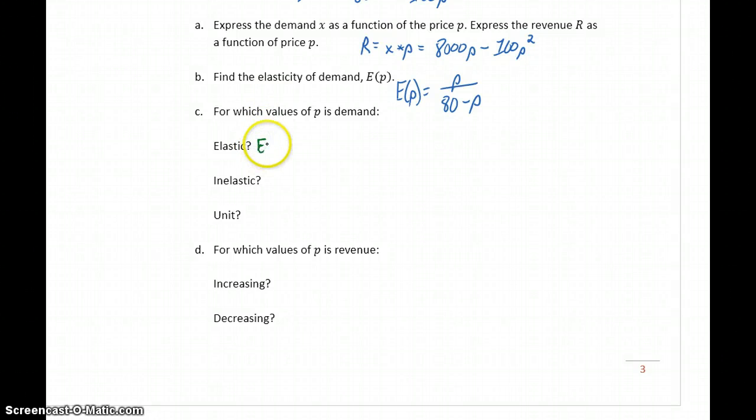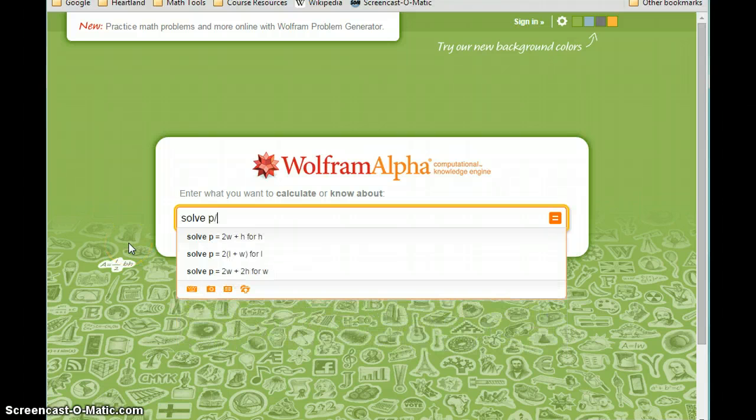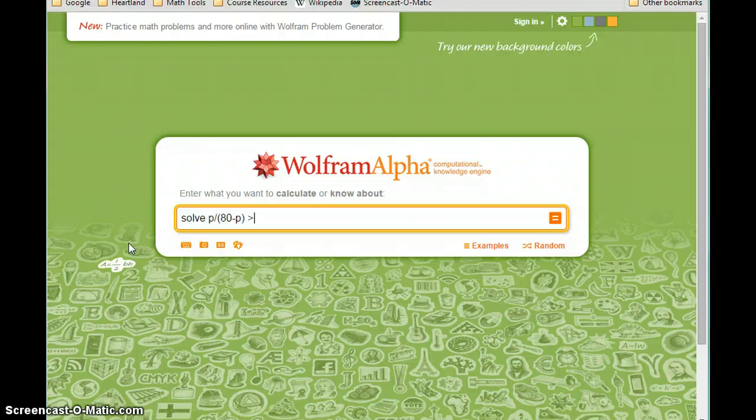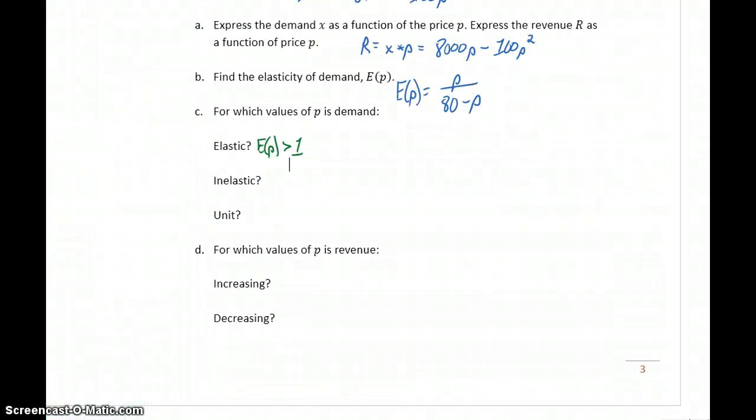So keep in mind, elastic means that our value for E of p needs to be larger than 1. So we can ask Wolfram Alpha to take this price-demand function and solve when is that price-demand function greater than 1. In this case, we get a result of between 40 and 80. So demand will be elastic whenever price is between 40 and 80. That means if we're anywhere in that price range, we should decrease our price in order to increase revenue.